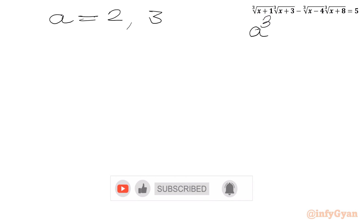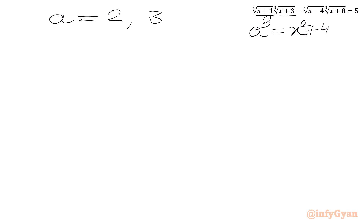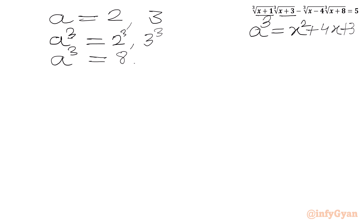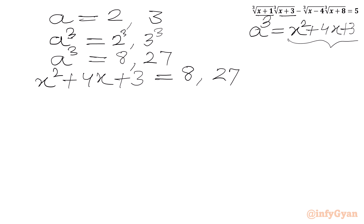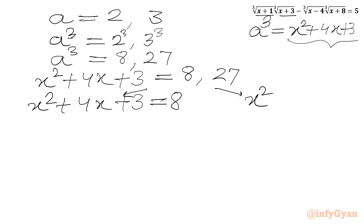Now a was our substitution — specifically a³ was our radicand x²+4x+3. So we need a³ first: 2³=8 and 3³=27. Replacing a³ with x²+4x+3 gives us two equations: x²+4x+3=8 and x²+4x+3=27.